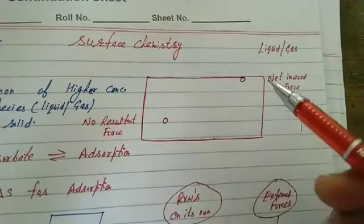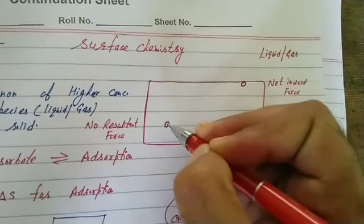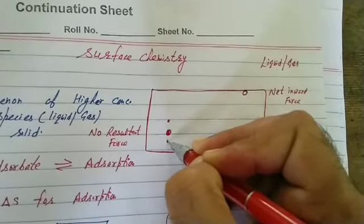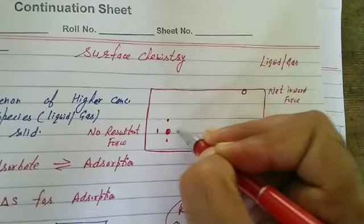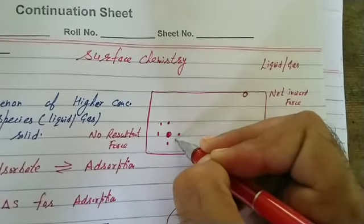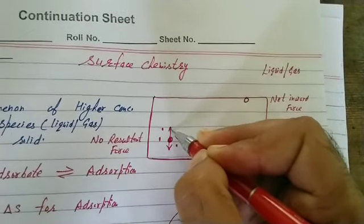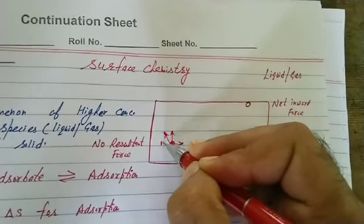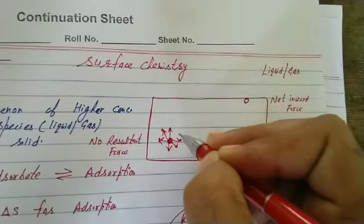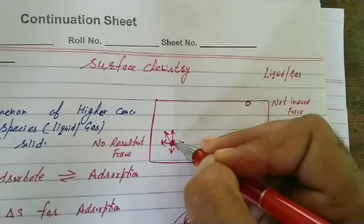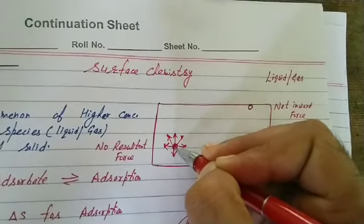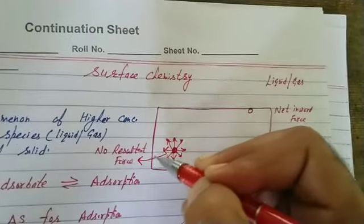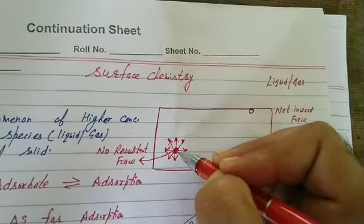Consider a solid substance — a particle present in bulk. This particle is uniformly attracted from all sides by identical molecules. Particles possess intermolecular forces, but since it is uniformly attracted from all sides, it has no resultant force. It is free.